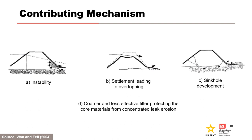At the top left, sloughing of the downstream slope due to increased seepage flow results in a higher permeability shell after washout. At the top middle and right, settlement or sinkholes may occur as the overlying adjacent finer materials are eroded into the remnant coarser matrix. At the bottom, filters constructed of internally unstable soil will have the potential for erosion of finer particles in the filter, rendering the filter coarser and less effective in protecting core materials from concentrated leak erosion.